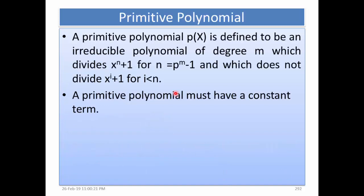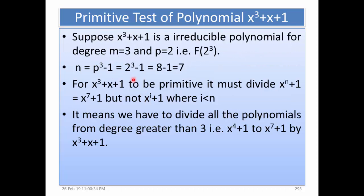Now we see what a primitive polynomial is. A primitive polynomial P(x) is defined to be an irreducible polynomial of degree m which divides x^n + 1 for n equal to p^m minus 1, and which does not divide x^i + 1 for i less than n. A primitive polynomial must have a constant term as well. We test whether the irreducible polynomial x³ + x + 1 is a primitive polynomial for the extended Galois field GF(2³).